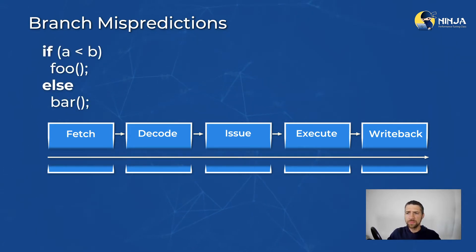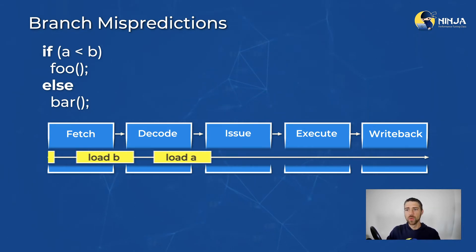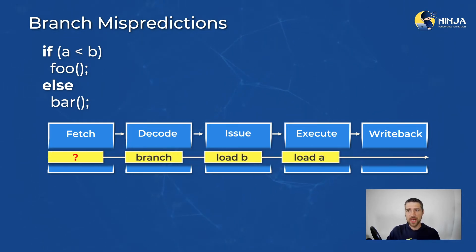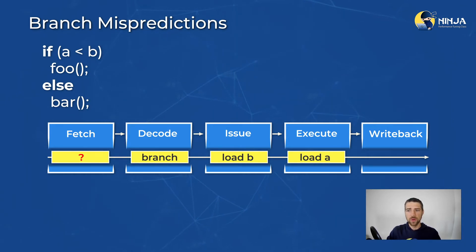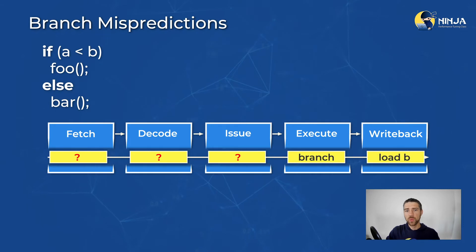Consider this simple piece of code: if a is less than b, we call foo, otherwise we call bar. Let's see how this code progresses through the pipeline. We load a, then load b, then we check the condition and branch. But here is the catch — the decoder sees the branch but doesn't know what to do with it. Should we call foo or bar? The machine doesn't have a clue; this will only be known later when we execute the instruction and find out the result. So we stall and wait until we know which function to call.